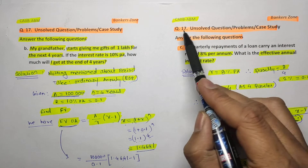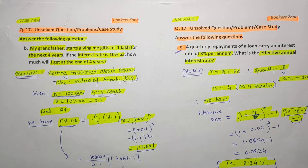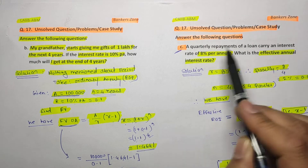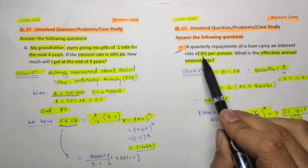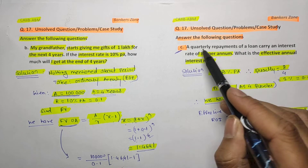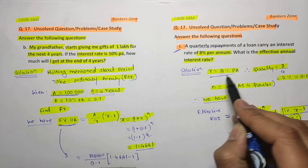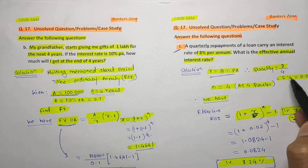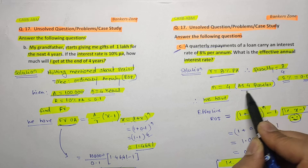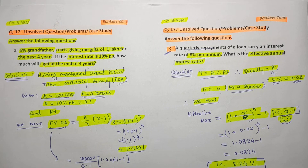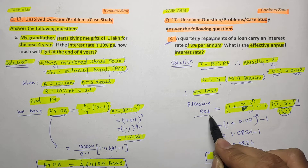Now, question number 17C: a quarterly repayment loan carries an interest rate of 8 percent per annum. What is the effective annual interest rate? The per annum rate given is 8 percent. Since there are four quarters in a year, 8 divided by 4 gives 2 percent quarterly rate of interest, which is 0.02. And n equals 4, as there are four quarters.